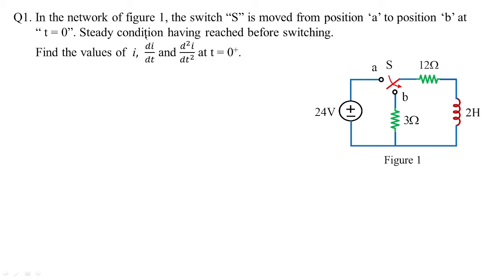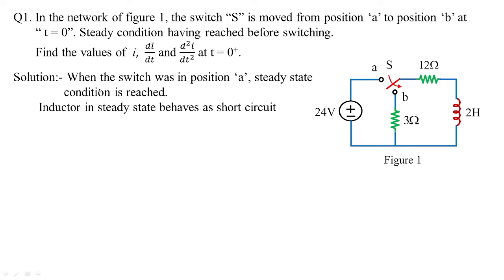It is given that steady-state conditions have been reached before switching. The switch was at position A, steady state was reached, and then the switch is moved from A to B. When the switch is moved to B, we need to find the initial and final conditions of the current behavior. When the switching position was at A and steady state was reached, the inductor behaves as a short circuit under steady-state conditions.